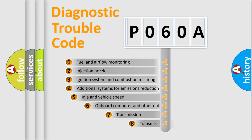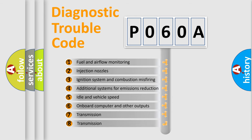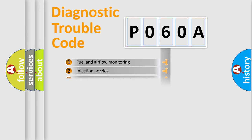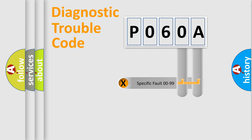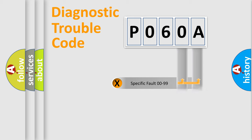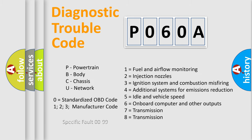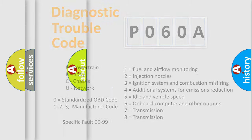The third character specifies a subset of errors. The distribution shown is valid only for the standardized DTC code. Only the last two characters define the specific fault of the group. Let's not forget that such a division is valid only if the second character code is expressed by the number zero.